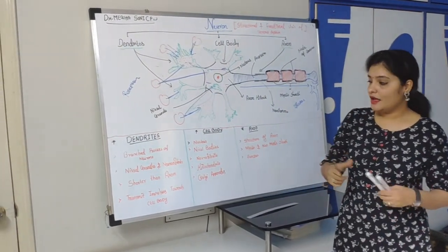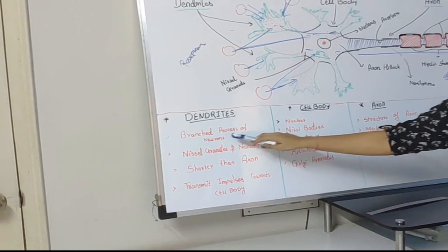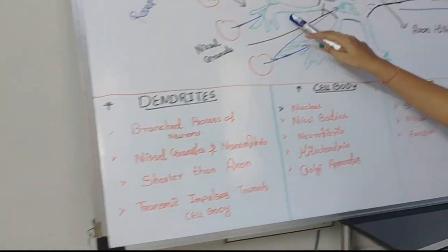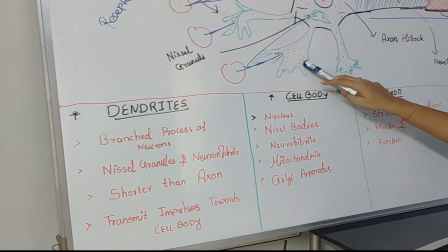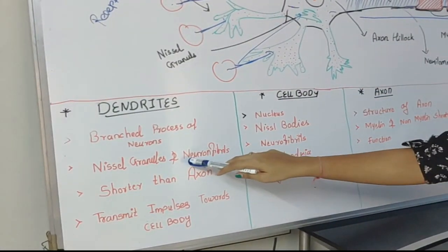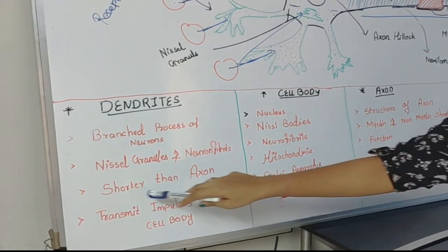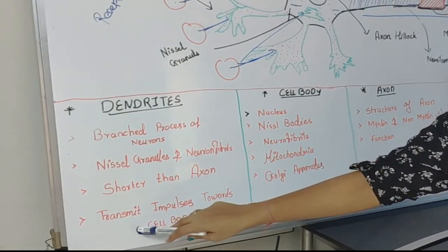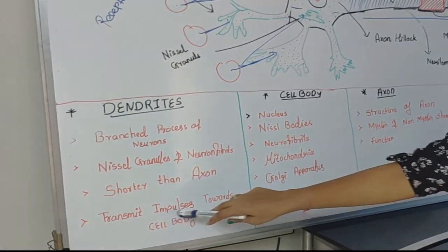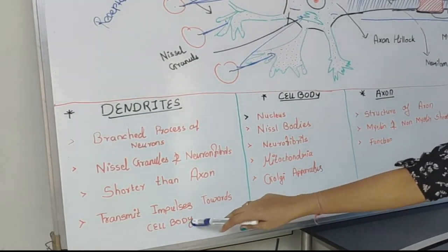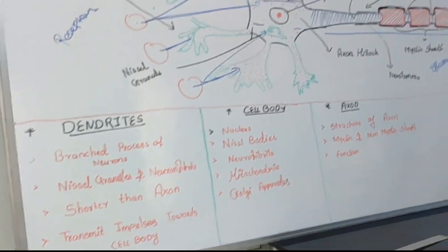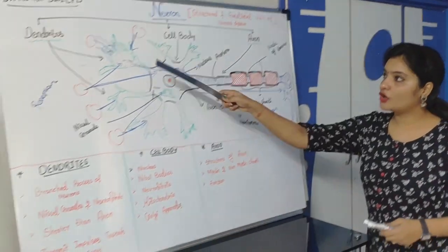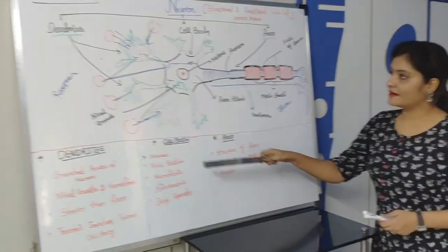We have seen that the dendrites are branched processes of the neuron. They have Nissl granules and neurofibrils, are shorter than the axon, and they transmit the impulses towards the cell body.